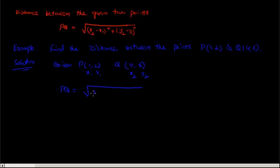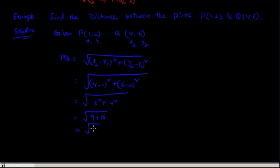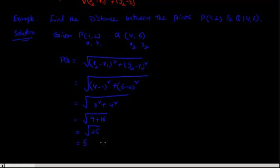Substituting the values of x1, y1, x2, y2 into the formula we get: square root of (4 minus 1) squared plus (6 minus 2) squared, which equals square root of 3 squared plus 4 squared, which equals square root of 9 plus 16, which equals square root of 25, which equals 5. So 5 is the distance between the given points P(1, 2) and Q(4, 6).